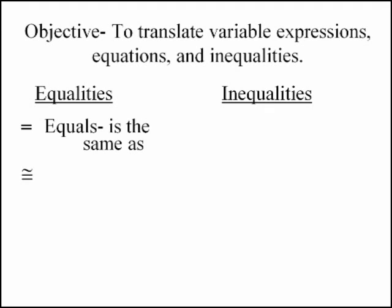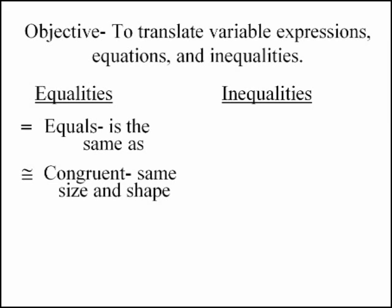This is a symbol from geometry. Congruent means the same size and same shape. For some reason, we don't say triangles are equal. We say they are congruent. They have the same size and shape.